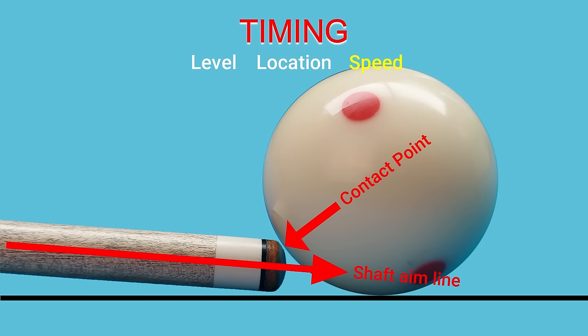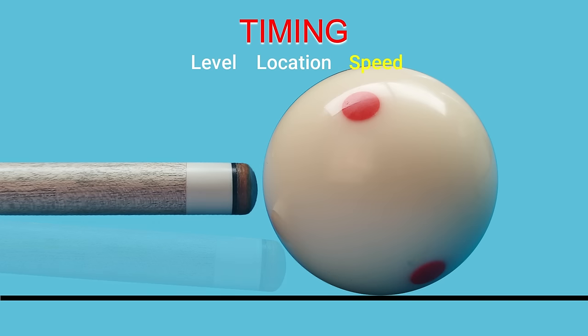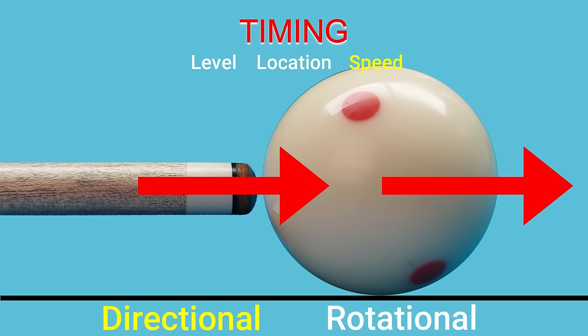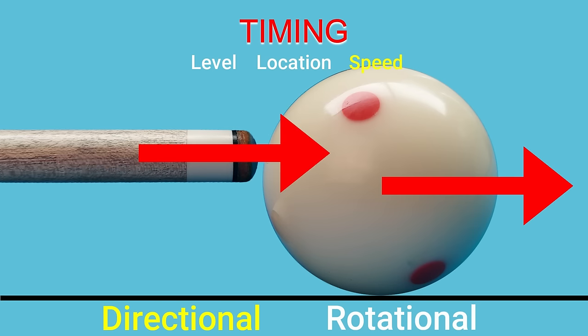When the cue tip strikes the cue ball, it imparts two types of energy: directional energy and rotational energy. Directional energy means the cue ball will have momentum and travel in the direction your cue stick was pointed at the moment of impact. This energy transfer occurs no matter where you strike the cue ball.